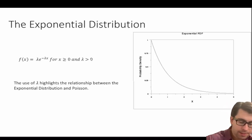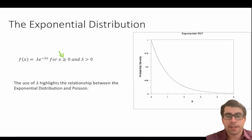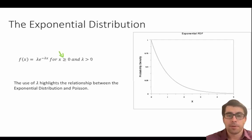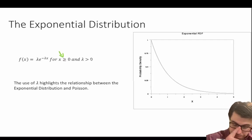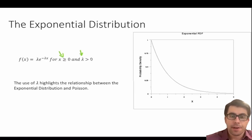The condition x greater than or equal to zero means that time must be greater than or equal to zero, because we use time as our variable x. So time cannot be negative — it can be right at the start, but it must be greater than or equal to zero. Lambda in exponential distributions is effectively our rate parameter, and it must be greater than zero.